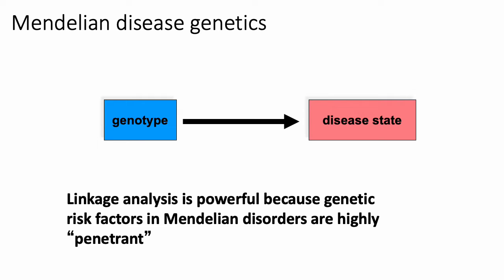This is in contrast to polygenic traits, which are controlled and driven by many genes. In Mendelian disorders, genetic risk factors are highly penetrant. Penetrance refers to the fraction of individuals who have a genetic variant and also exhibit the phenotype you're studying. If you have high penetrance, that means every time you see this particular variant, you'll often see the corresponding phenotype.